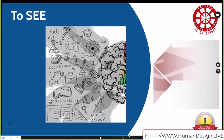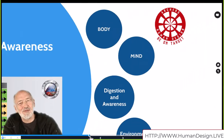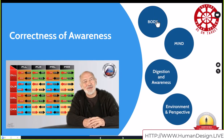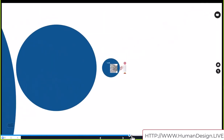Our minds haven't caught up yet with the brain-body system. It's really important to grasp that this is not about trying to superimpose new language or new experience onto you, but having you start from the very beginning to align to your correctness of awareness — the body, the digestion and awareness, and the perspective, environment and perspective being part of these four transformative gifts we are all designed to partake in.